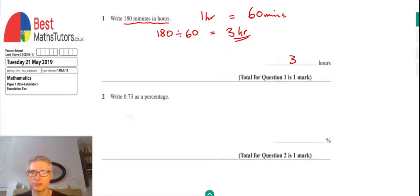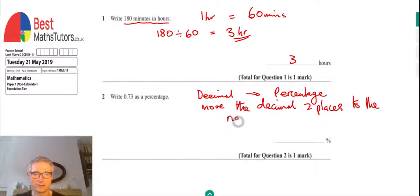For the second question, we've got to write 0.73 as a percentage. The easy way to convert a decimal to a percentage is just move the decimal point two places to the right. So if we've got 0.73, we take our decimal point and move it one, two places, so skip over two numbers, and that puts it after the three. What we've actually got is 73 percent. That's our answer for the second question.